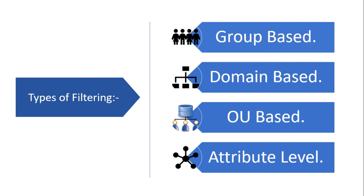The next one is OU-based filtering, which is the most common filtering used by enterprises. If you don't want to sync any number of users or any sort of object, you can move them to a respective OU which you can uncheck, and those objects will not be synced to the cloud. However, it is not always possible to change the location of an object because there may already be GPOs bound to the respective OUs, which can affect user experience — this is one situation where you might need to switch to attribute-level filtering.